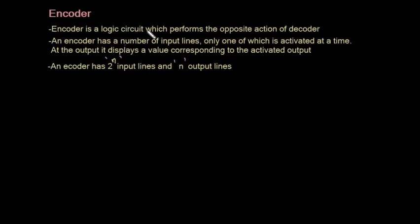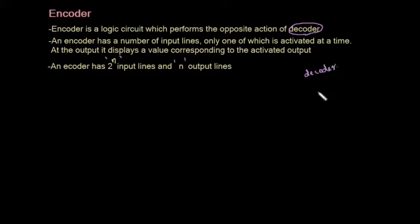An encoder is a logic circuit which performs the opposite action of a decoder. An encoder has a number of input lines, only one of which is activated at a time, and the output displays a value corresponding to the activated input. A decoder with n input lines has 2-raised-to-n output lines, so an encoder has 2-raised-to-n input lines and n output lines.